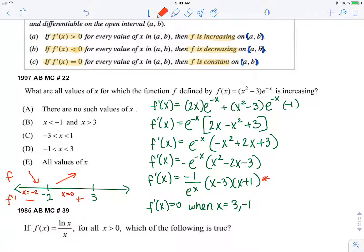And if I check a number greater than 3, let's say x equals 4, I get a negative multiplied by a positive multiplied by a positive, which is a negative. So it's decreasing on that interval. The only interval where my function is increasing is negative 1 to 3.